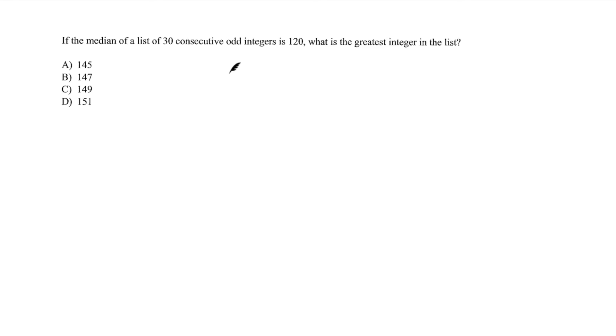Let's have a look at this interesting question. If the median of a list of 30 consecutive odd integers is 120, what is the greatest integer in the list? Now there are a couple of very important things that are given in the question and the most important is this number. We have consecutive odd integers but our median is an even integer. How is that possible?